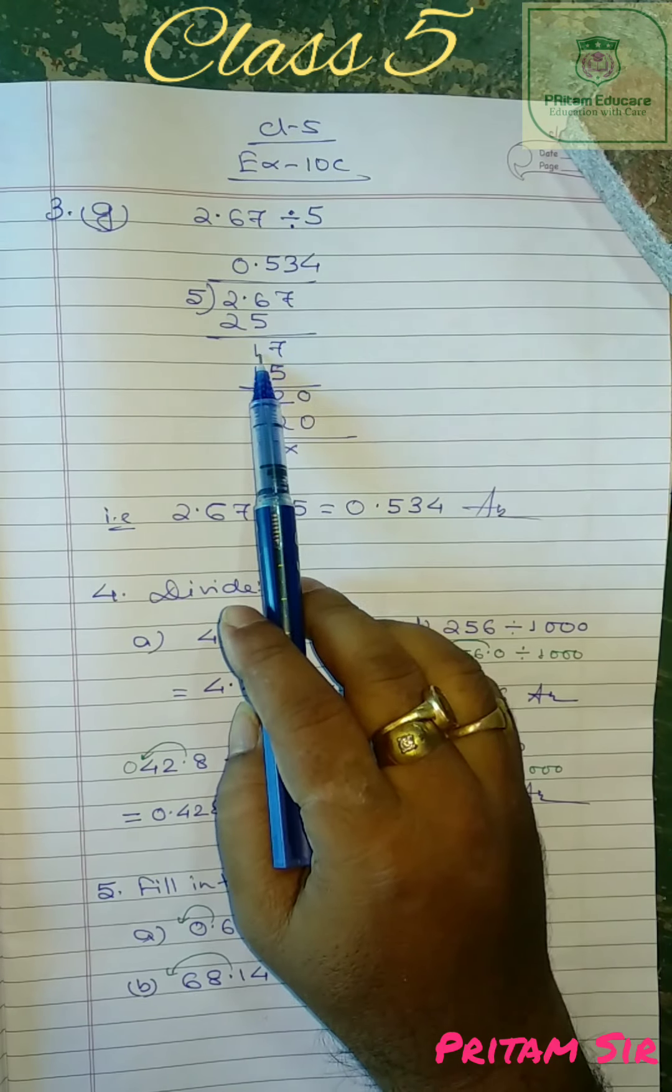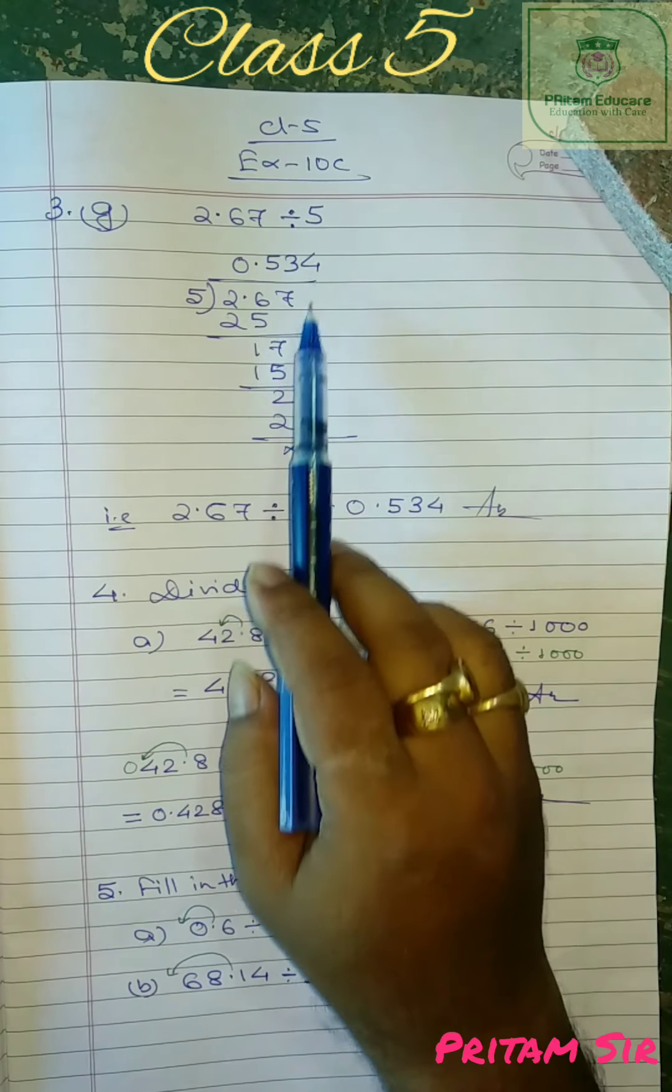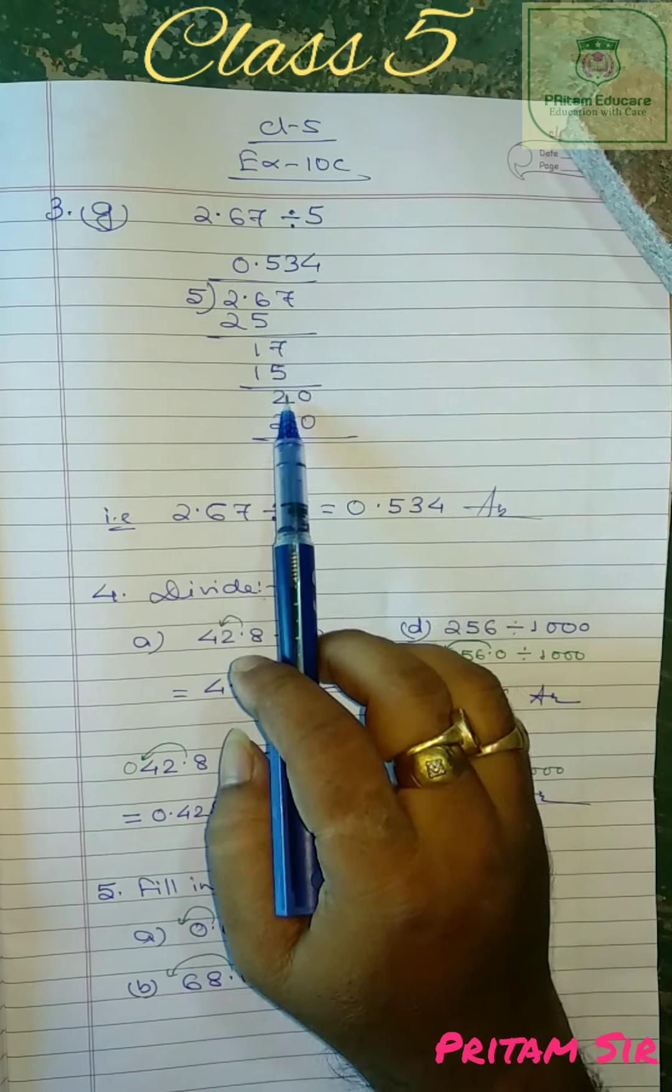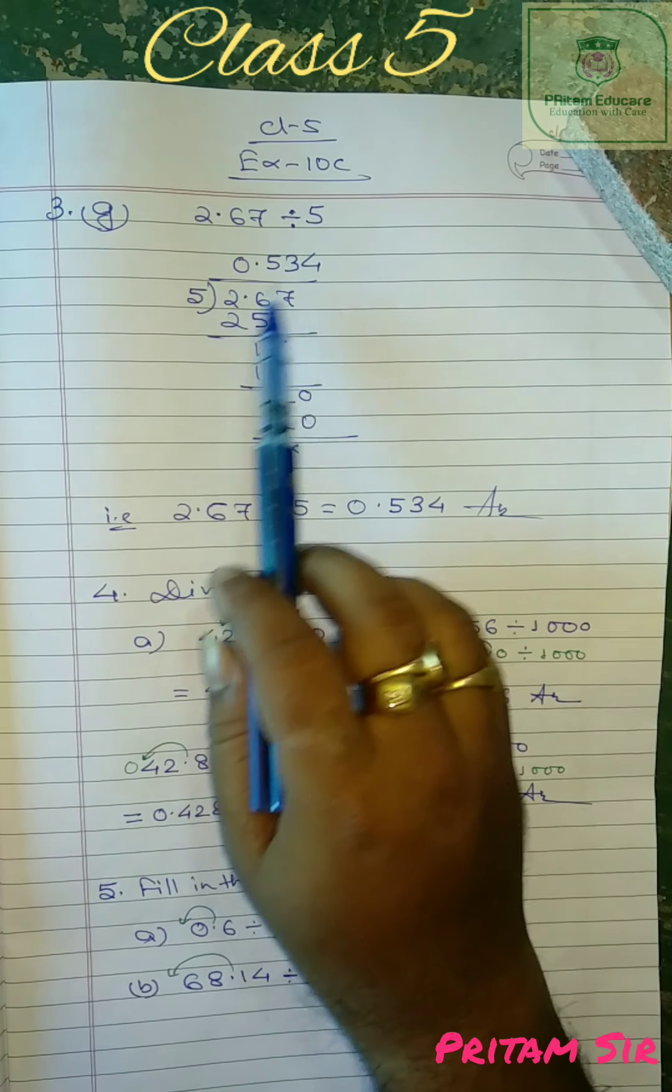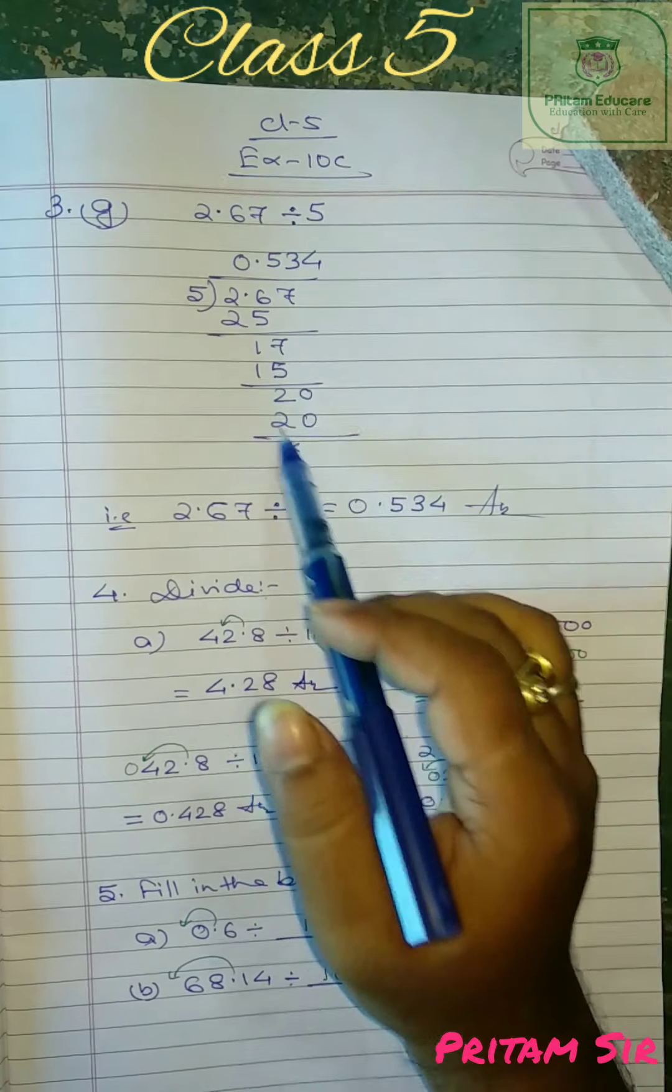So now we have 26. So 5 into 5 is 25, 1, 7, 17. 3 into 5 is 15. 7 minus 5 is 2. 2 and 4 decimal we got 0. 5 into 4 is 20. In this case, as you have to continue the divisions till remainder is 0, until your remainder is not coming 0, you will get unlimited number of zeros for decimal.